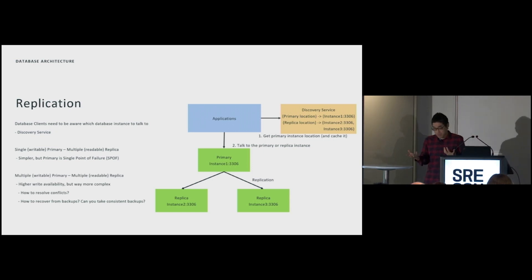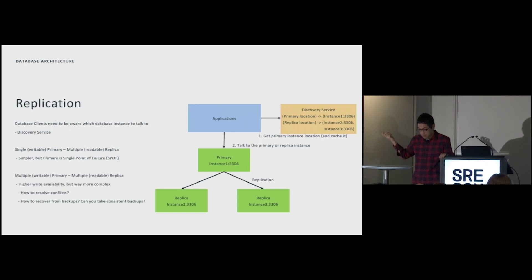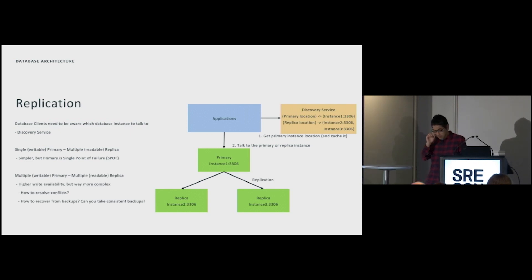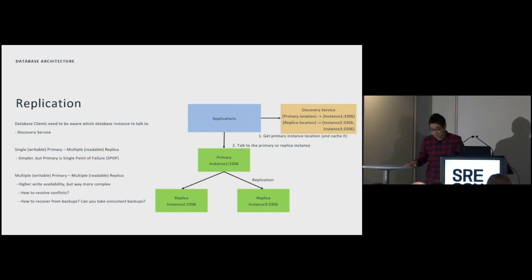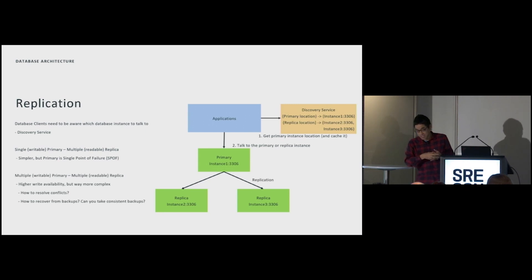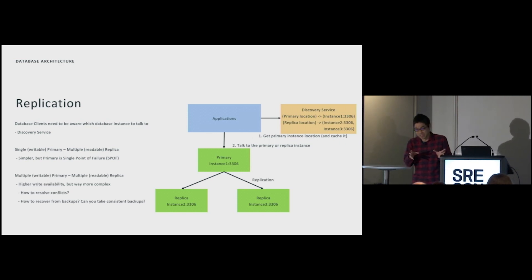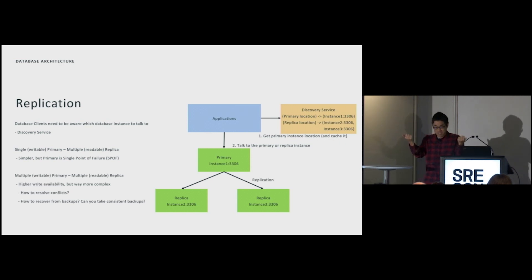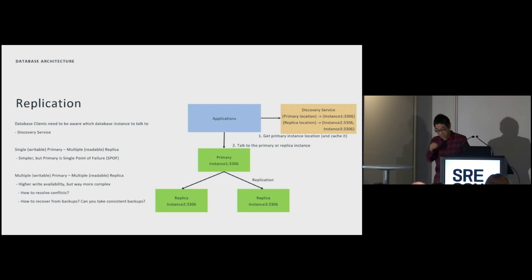Replication has several types of architectures. Two major types are: single primary with multi-replica, where there's only one primary instance that accepts writes — all writes go to the primary, then replicate to replicas — and multi-primary multi-replica, where multiple primary instances serve writes and replicate to each other. Multi-primary is really hard to operate in reality. For example, if you update the same key in two different databases and update the same counters, how do you merge these results? How do you take backups for multi-primary instances? There are a bunch of consistency challenges.